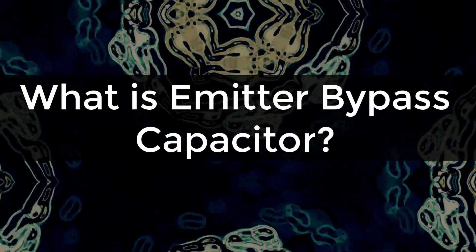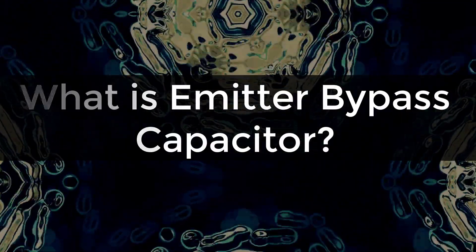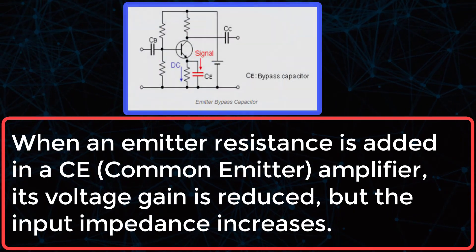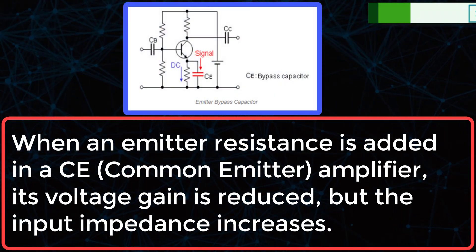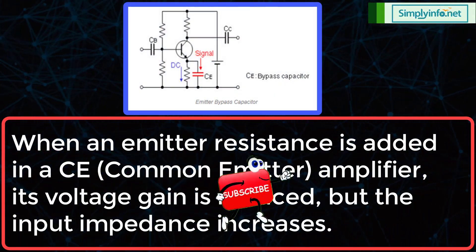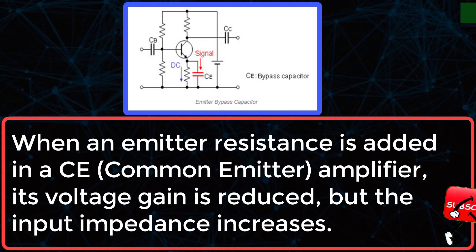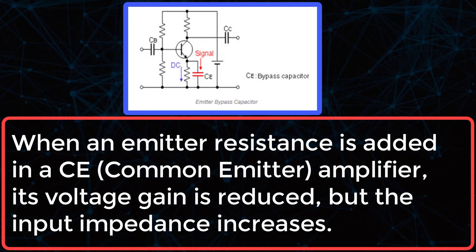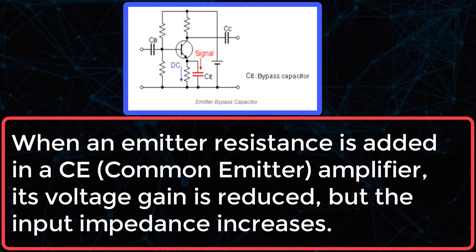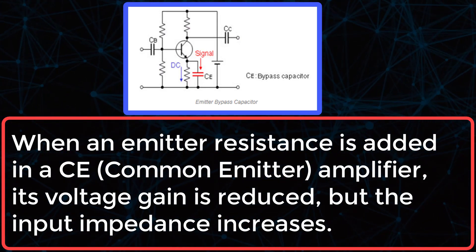What is an Emitter Bypass Capacitor? When an emitter resistance is added in a CE — that is, a common emitter amplifier — its voltage gain is reduced, but the input impedance increases.